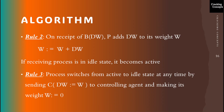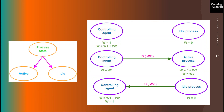Rule 3: a process can switch from active to idle state at any time by sending a control message whose weight is W, that is the weight DW it received is sent back along with the control message. The now-idle process will have a weight of 0. As shown in the example, the active process changes its state to idle and sends its weight W2 via a control message to the controlling agent, so its current weight becomes 0.